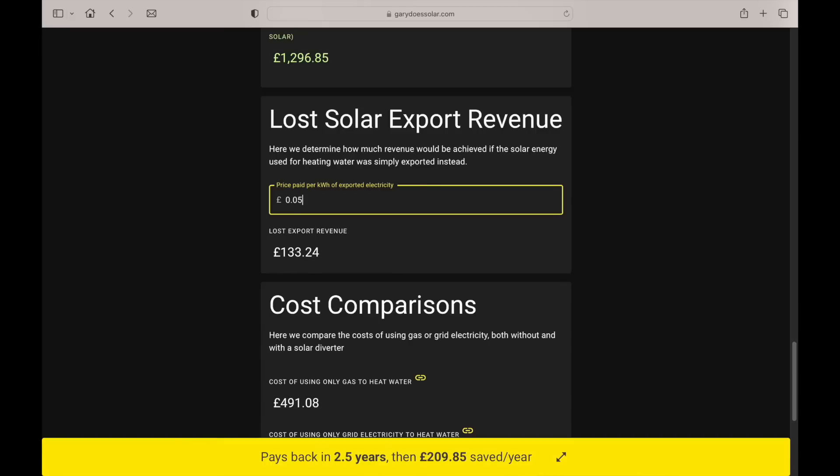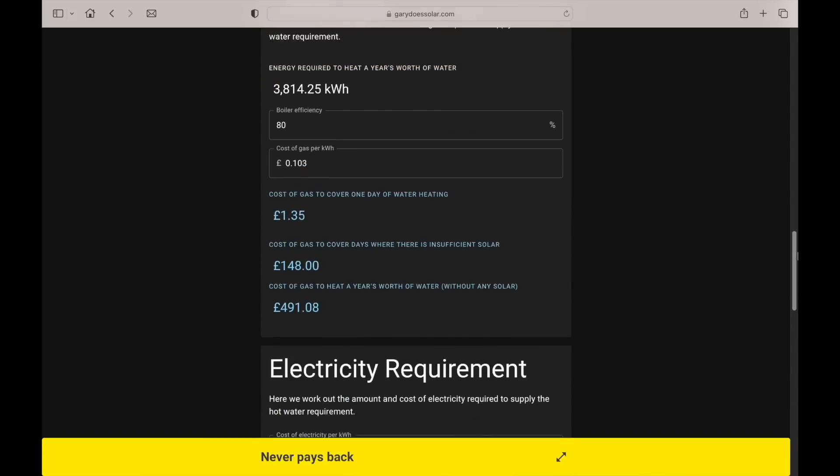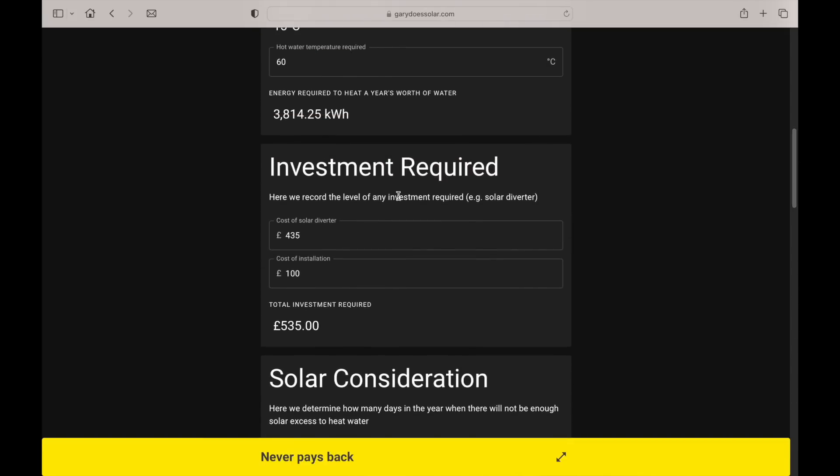Look what happens to that payback period as I slowly increase the export rate. By the time I get to 12p, the payback period is over 22 years. And at 13p, the utility decides that you will never get payback. And look, that's even if the solar diverter was provided to you and installed for free.